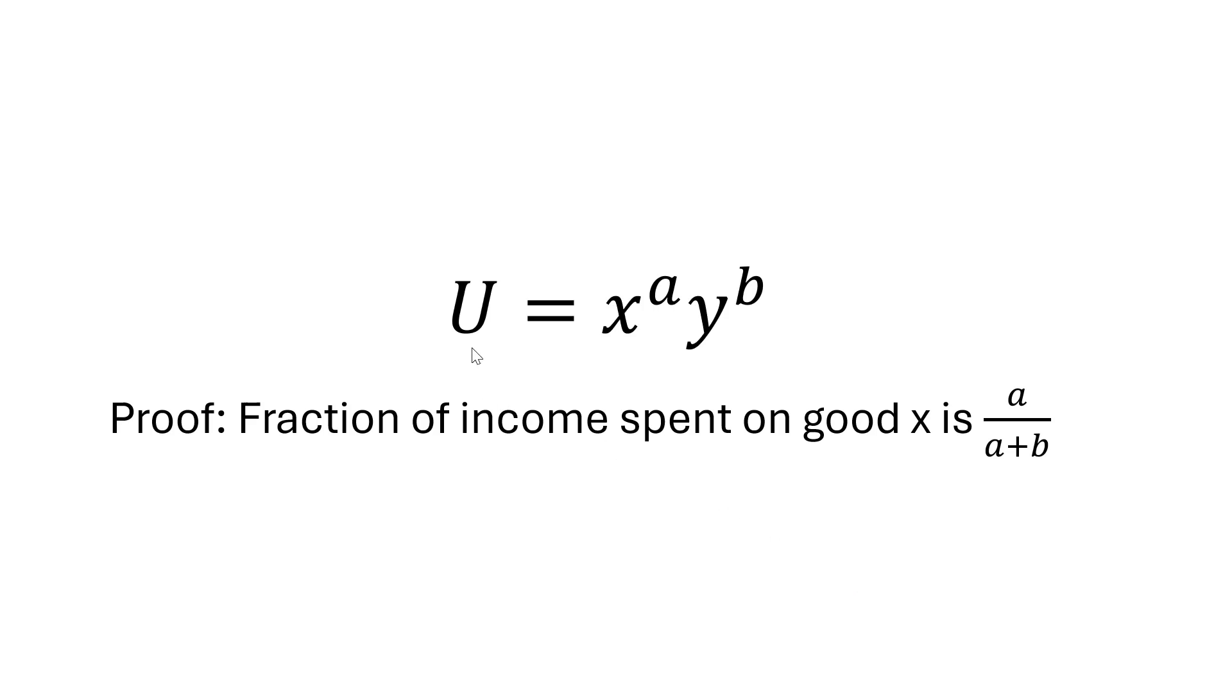Hello, in this video we're going to look at this consumer's utility function and prove that the fraction of income spent on good x is a/(a+b), where these letters represent the exponents on the goods in the utility function. This is what we're going to show.